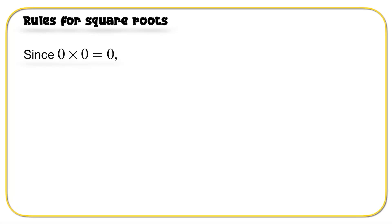We need to consider some rules for square roots. The first rule: since 0 times 0 is equal to 0, therefore the square root of 0 is also equal to 0. That's rule number one — pause the video and make sure you write that down.